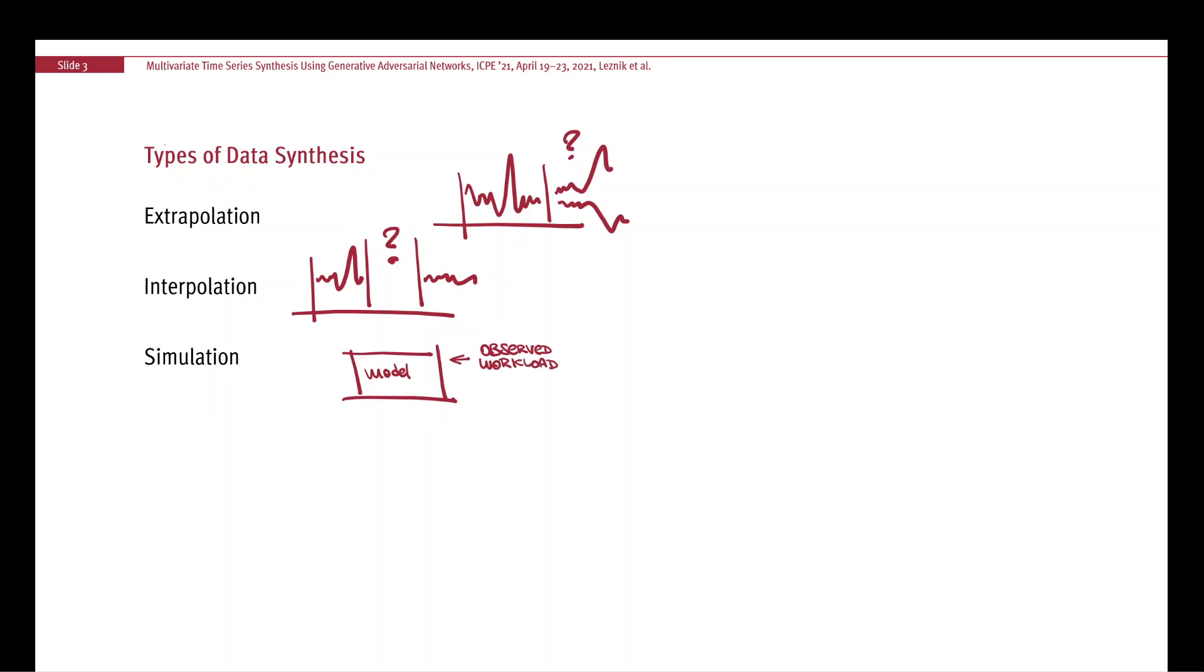We also have simulation, which to some extent can be regarded as data synthesis. Here we're talking about using observed workload to create a model, often a model of user interaction, and then use that model to create more data and see how an application would perform. This is often used in HTTP benchmarks. In our case, we do not aim to simulate user behavior directly, but we simulate or synthesize resource utilization metrics that result from input workloads. And the one we're using is data generation using artificial neural networks, specifically generative adversarial networks.